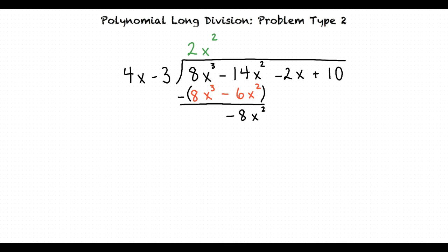Here we are subtracting a negative 6x squared. Subtracting a negative 6x squared is the same as adding 6x squared. For this reason the result is negative 14x squared plus 6x squared which equals negative 8x squared.